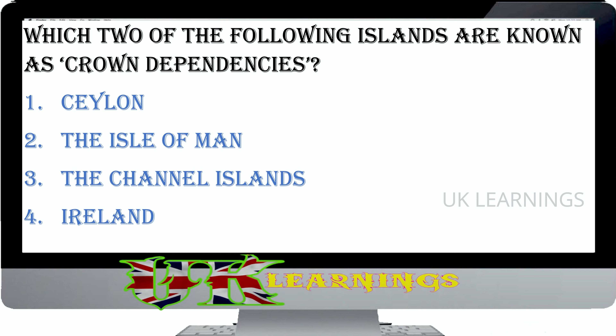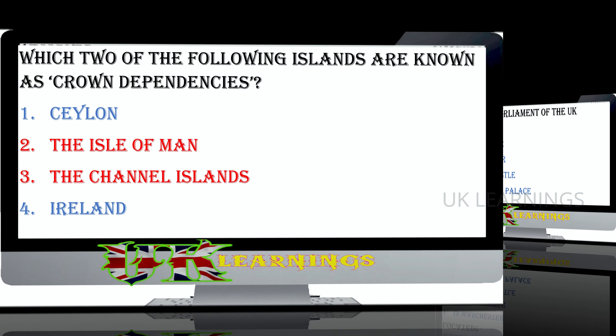Which two of the following islands are known as Crown Dependencies? Ceylon, the Isle of Man, the Channel Islands. The correct answers are the Isle of Man and the Channel Islands. There are also several islands which are closely linked with the UK but are not part of it — the Channel Islands and the Isle of Man. These have their own governments and are called Crown Dependencies.